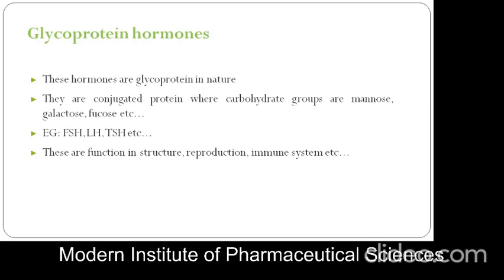Next are glycoprotein hormones. These hormones are glycoprotein in nature — they are conjugate proteins with carbohydrate groups such as mannose, galactose, and fructose. Examples include FSH, LH, and TSH. Their functional role involves the reproductive and immune systems.